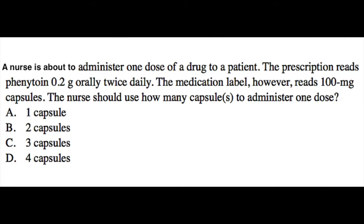In this question, a nurse is about to administer one dose of a drug to a patient. The prescription reads phenytoin, 0.2 grams orally, twice daily. The medication label, however, reads 100 milligram capsules. The nurse should use how many capsules to administer one dose? The answer choices are 1, 2, 3, or 4 capsules.